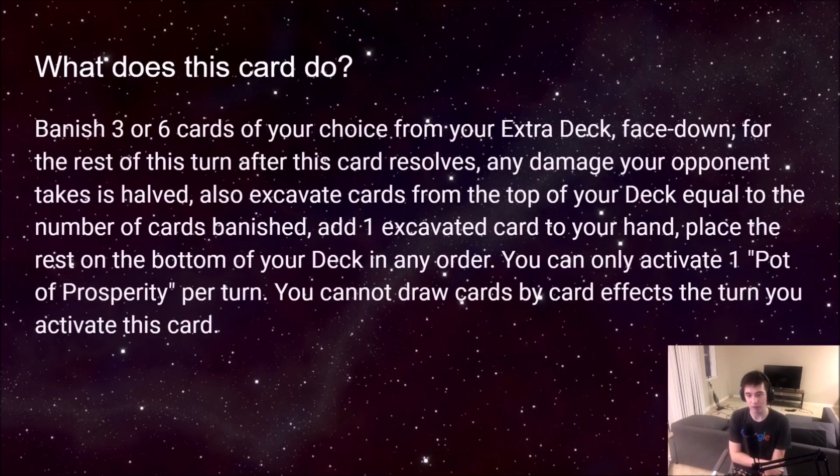Let's just start off by reading the card really quickly. You can banish 3 or 6 cards of your choice from your extra deck face down. For the rest of this turn after this card resolves, any damage your opponent takes is halved. Also, excavate cards from the top of your deck equal to the number of cards banished. Add 1 excavated card to your hand, place the rest on the bottom of your deck in any order. You can only activate 1 Pot of Prosperity per turn. You cannot draw cards by card effects the turn you activate this card.